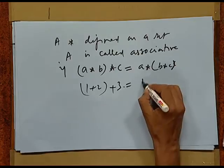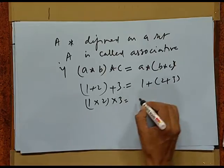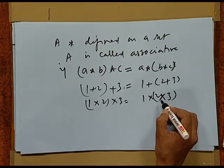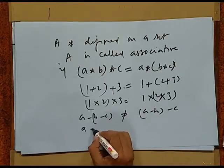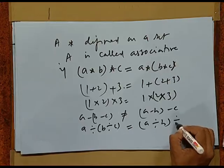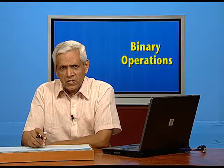Our usual operation of addition and multiplication follows the associative rule because 1 plus (2 plus 3) is always (1 plus 2) plus 3. Similarly, 1 times (2 times 3) equals (1 times 2) times 3. But (A minus B) minus C is not equal to A minus (B minus C). Similarly, (A upon B) upon C is not equal to A upon (B upon C). In fact, in life there are instances where this law fails.